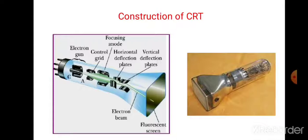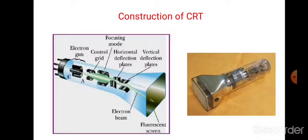How to construct the cathode ray tube? The cathode ray tube consists of the electron gun, control grid, focusing anode, horizontal deflection plates, vertical deflection plates, electron beam, and the fluorescent screen. The primary component of the cathode ray tube is the heated metal cathode and control grid. When an electric field is passed through the filament, it will heat up and through the grid it will release electrons.